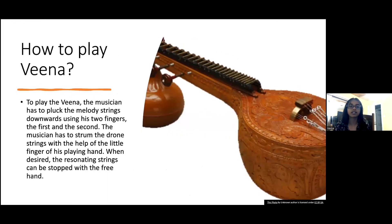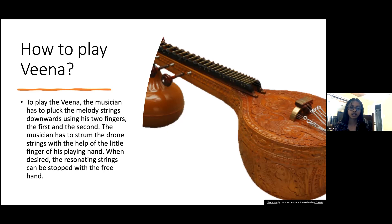How to play the Veena: to play the Veena, the musician has to pluck the melody strings downwards using two fingers, the first and the second. The musician has to strum the drone strings with the little finger of the playing hand when desired. The resonating strings can be stopped with the free hand.